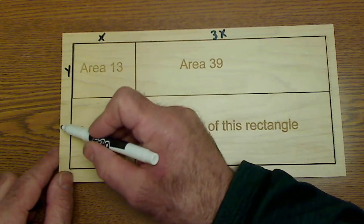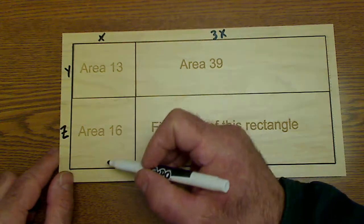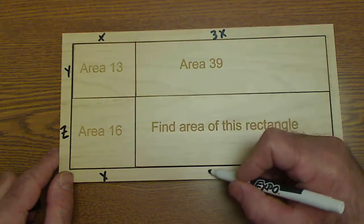Same thing here. I don't know this height, I could call it z, but if this is x, this is 3x.